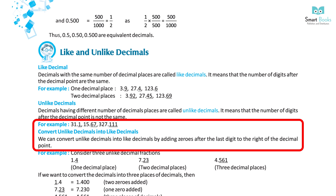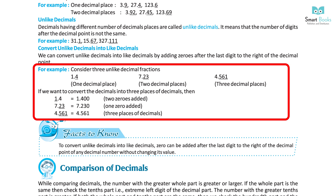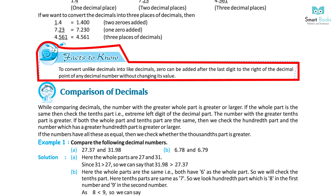Converting unlike decimals into like decimals: We can convert unlike decimals into like decimals by adding zeros after the last digit to the right of the decimal point. For example, consider 1.4 (1 decimal place), 7.23 (2 decimal places), and 4.561 (3 decimal places). To convert all to 3 decimal places: 1.4 becomes 1.400, 7.23 becomes 7.230, and 4.561 remains 4.561.